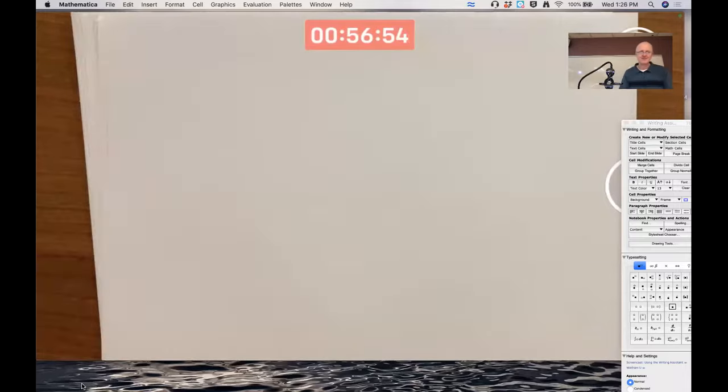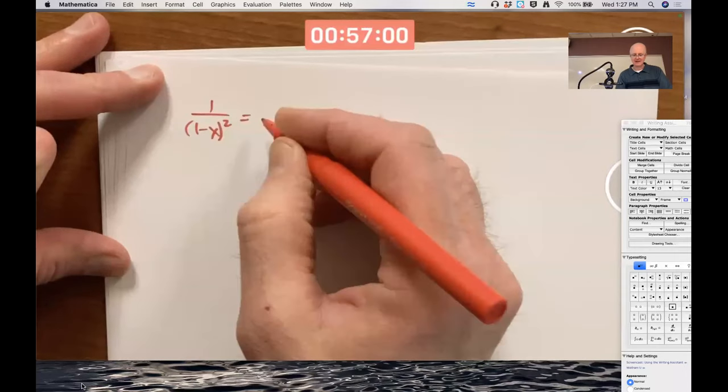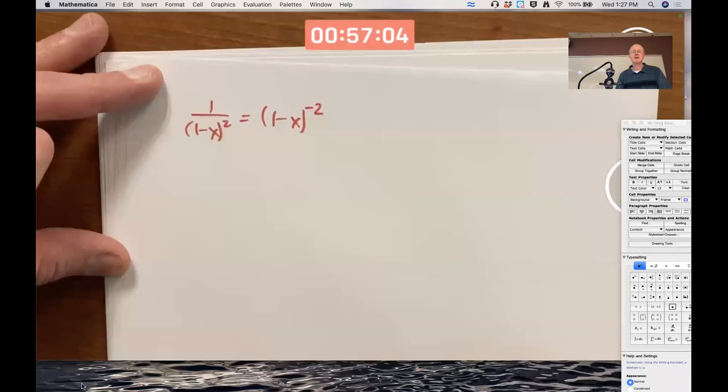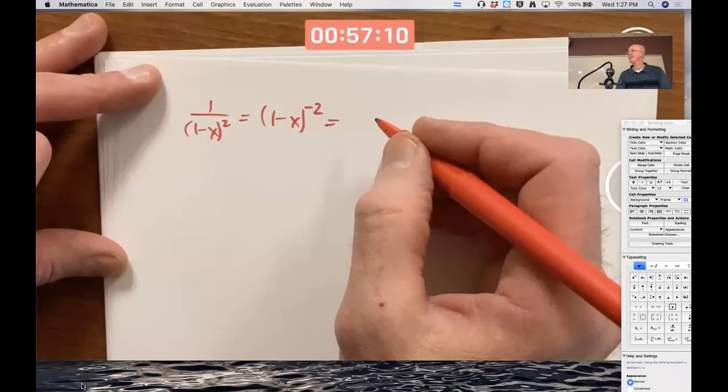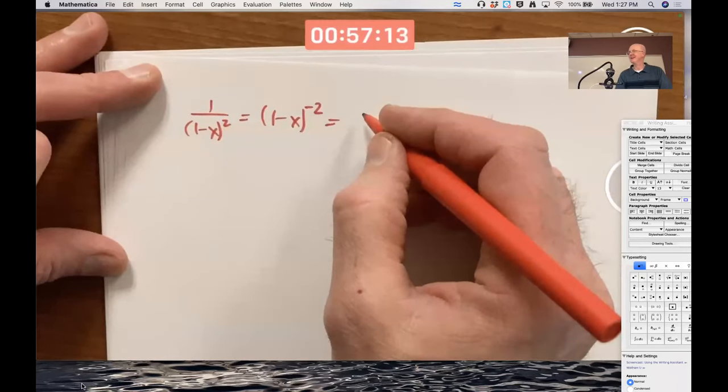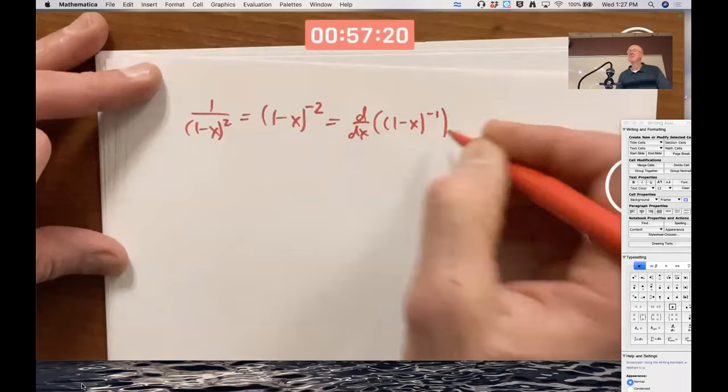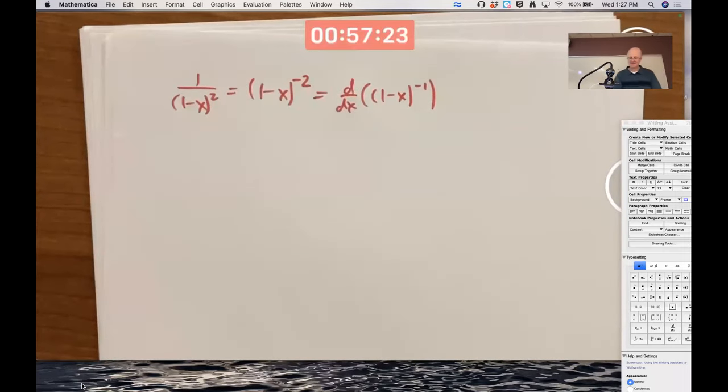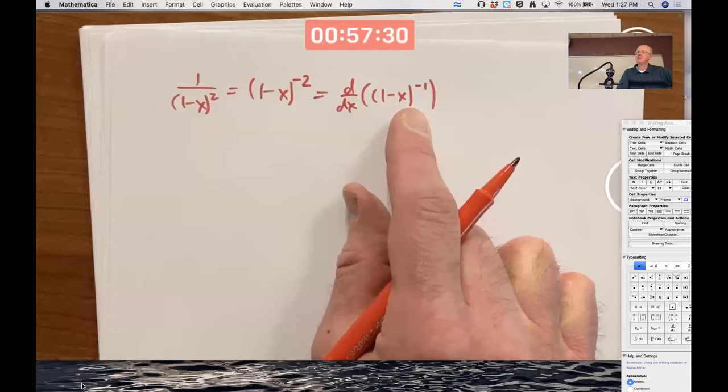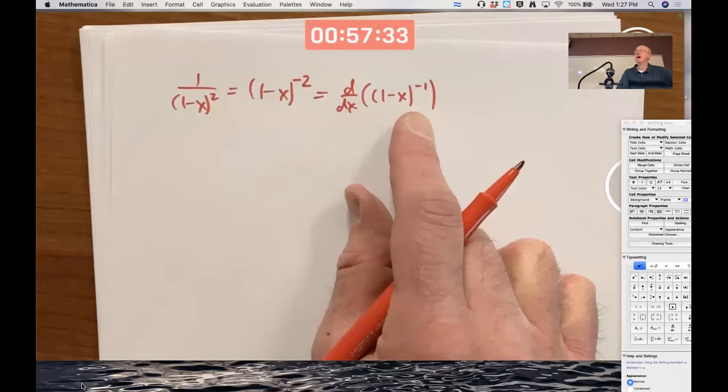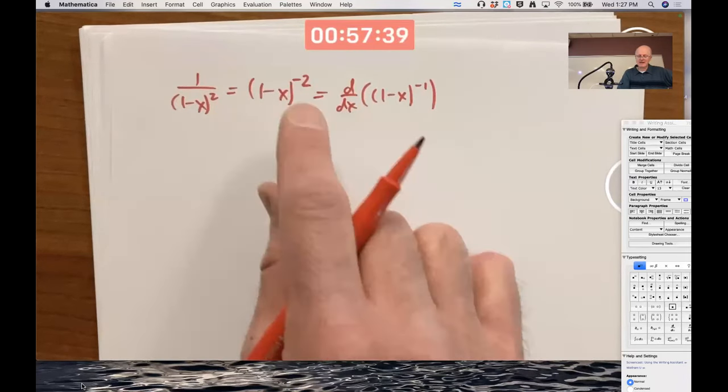Same problem, one more way. What other way could we possibly do? How about the fact that this function here, if you've worked with it enough, you realize it's the derivative of this function. Think about it. Differentiate that. Bring down the negative one. Negative one, one minus x. Subtract one from the exponent. Negative two exponent. Times chain rule. Another negative one. Two negative ones make a positive one, and we have a negative two power. This is correct.